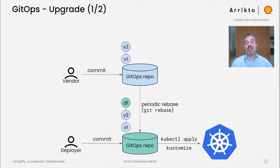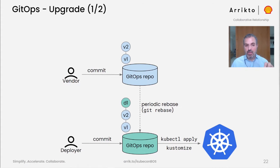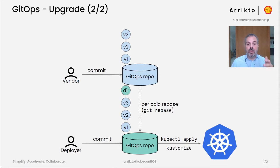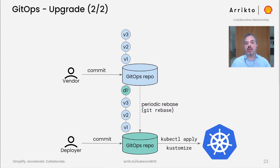Using GitOps makes upgrades a breeze. Let's assume the vendor is at version v2 and the deployer has committed deployment-specific configuration as commit d1 on top of v2. At some point the vendor produces v3. The deployer pulls and rebases their changes so they now sit on top of v3 as a new commit, d1 prime. They have essentially upgraded their infrastructure and can now reapply.